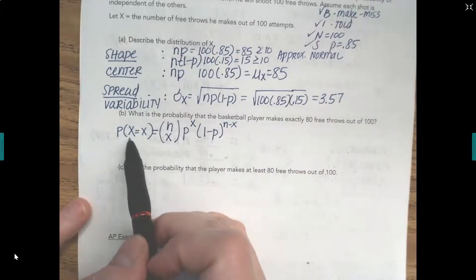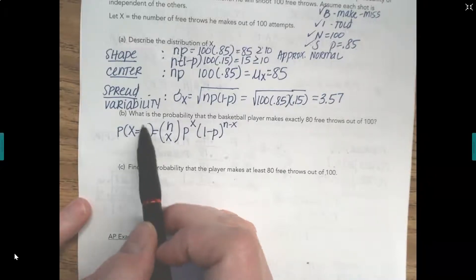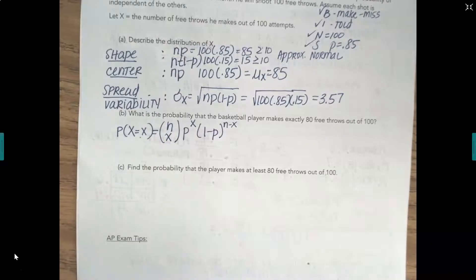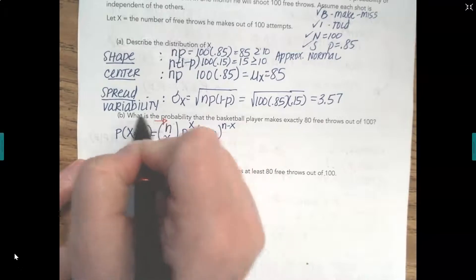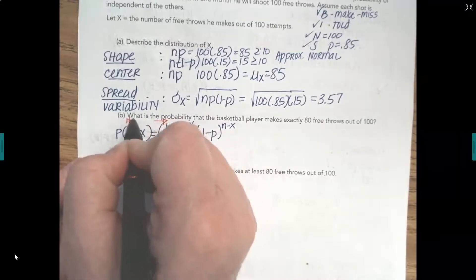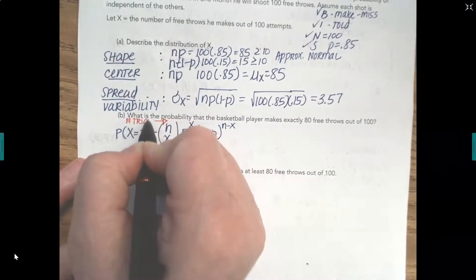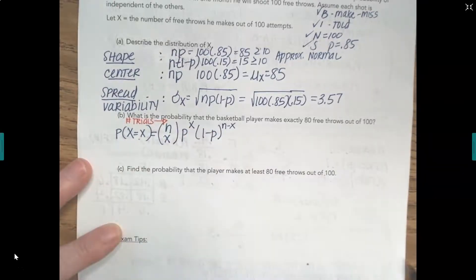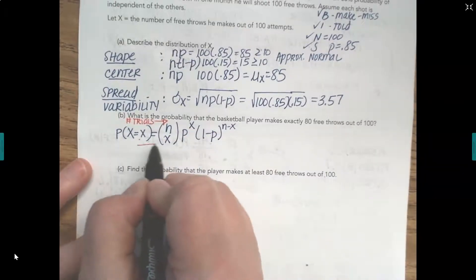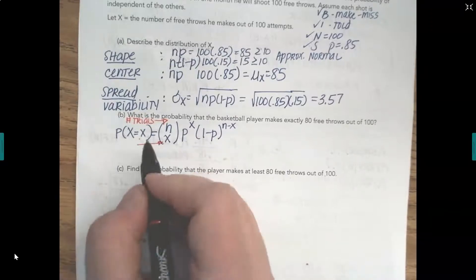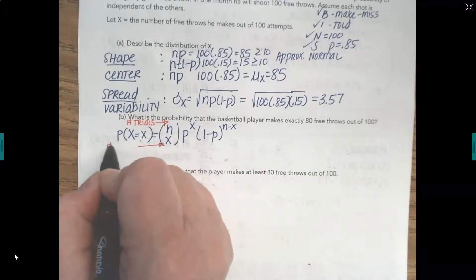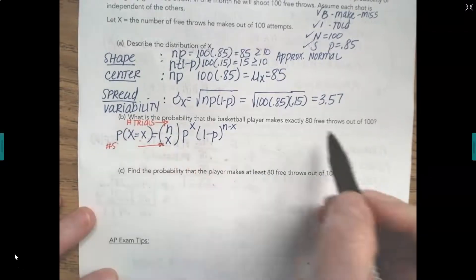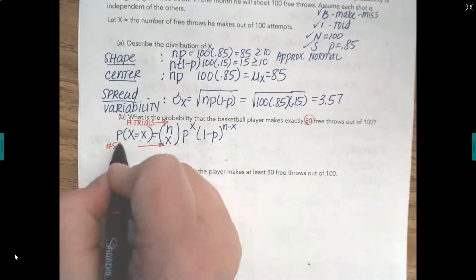So what's the probability that the random variable x equals a particular number? And that's our total number of trials. So n is the number of trials, which is, in this case, it's going to be 100. x is the number of successes that we're wanting out of those trials, which is that we want to know the probability of making 80 free throws.